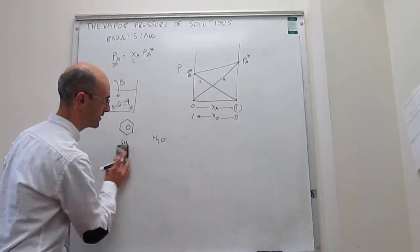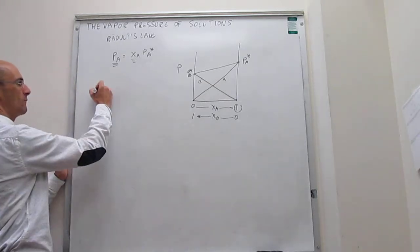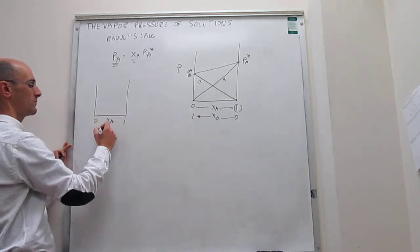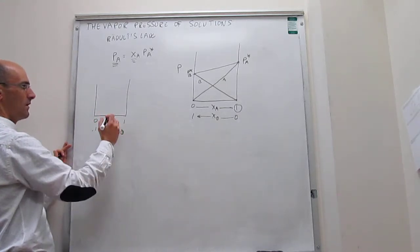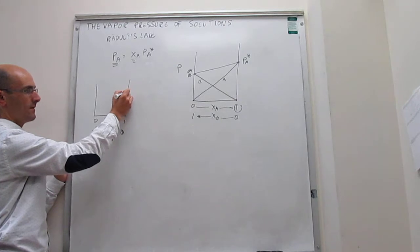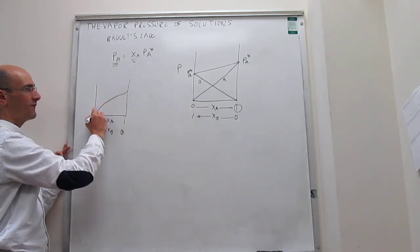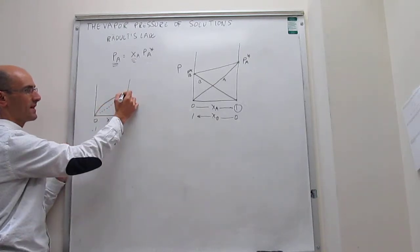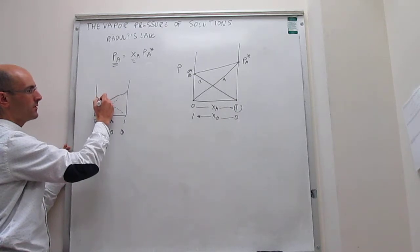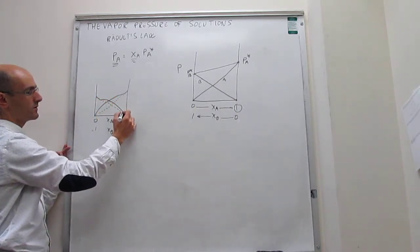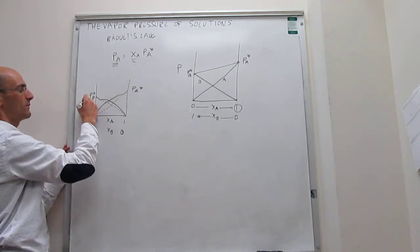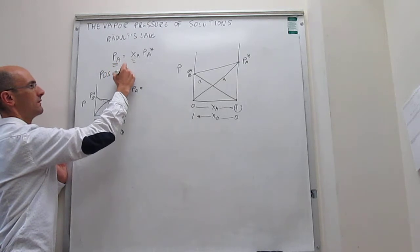There are two types of deviations that are easily seen. One of them is what we call a positive deviation. What happens in a positive deviation is that you do satisfy Raoult's Law at high concentrations, but you actually have a higher vapor pressure than what you would expect from Raoult's Law — shown by the dashed line. For the other component, you have the same thing: you only follow Raoult's Law at high concentrations, and at low concentrations there's a different regime. This is called a positive deviation.